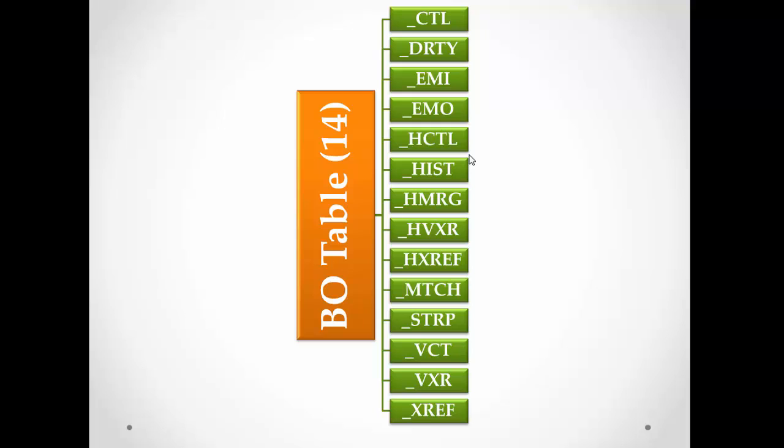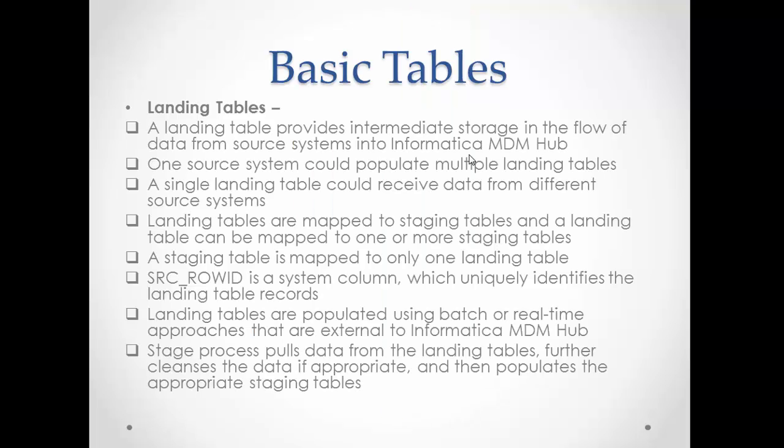Starting with the landing table — it provides intermediate storage of data in the flow from the source system to the Informatica MDM Hub. For one source system, we can have one landing table or multiple landing tables. One source system could populate multiple landing tables, and a single landing table could receive data from multiple sources. Landing tables are mapped to staging tables.